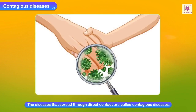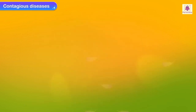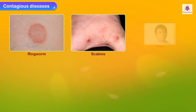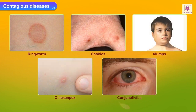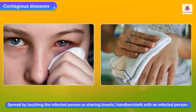Contagious diseases: the diseases that spread through direct contact are called contagious diseases. Ringworm, scabies, mumps, chickenpox, and conjunctivitis spread by touching an infected person or sharing towels, handkerchiefs, etc. with an infected person.